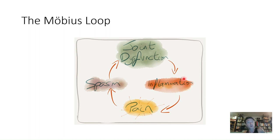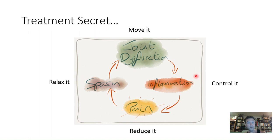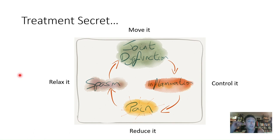Here's the treatment secret: if you have joint dysfunction, correct it. If you have inflammation, control it. Reduce the pain and relax the spasm. That's your general treatment approach. I'm going to revisit this again and again in every region of the body because it's something I really want you to understand.